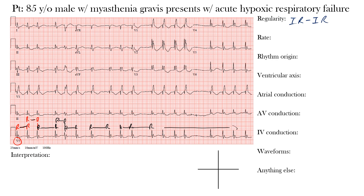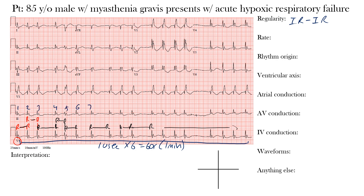Because we have an irregular rhythm, we estimate the heart rate by counting the complexes across the EKG and multiplying by six. The entire EKG represents 10 seconds, and 10 seconds × 6 = 60 seconds, or one minute. Counting the complexes across gives us 18, and 18 × 6 = 108 beats per minute. The actual EKG machine gave a reading of 105 bpm — quite close. So we have a rate of approximately 105 beats per minute, which is above 100.